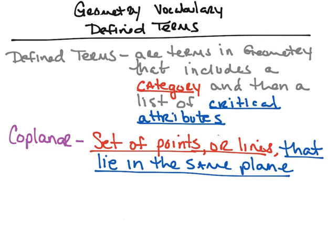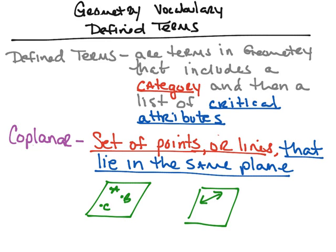The next defined term is co-planar. Its definition is it's a set of points or lines that lie on the same coordinate plane. The category is a set of points or lines, and the critical attributes are that they lie in the same plane. For example, if this is our plane and we have three points — point A, point B, and point C — all three are on that same plane, so we call them co-planar. Likewise, if I had two lines on the same plane, we would also call those co-planar.